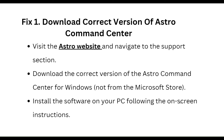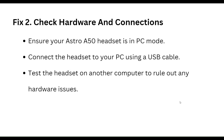Our first step is to download the correct version of Astro Command Center. Visit the Astro website and navigate to the support section. Download the correct version of Astro Command Center for Windows, not from the Microsoft Store. Install the software on your PC following the on-screen instructions.